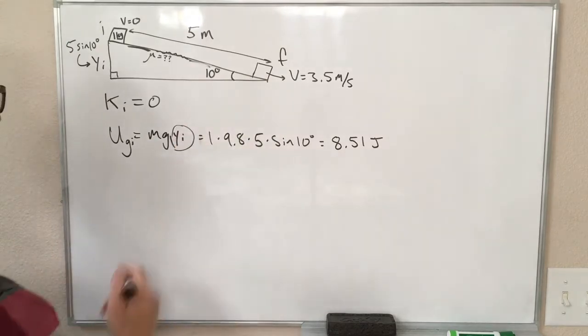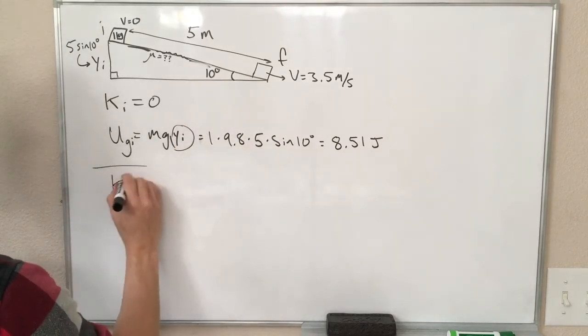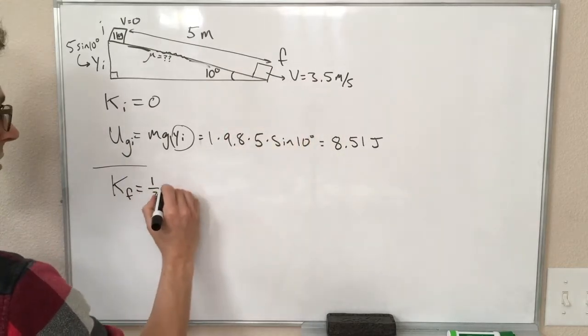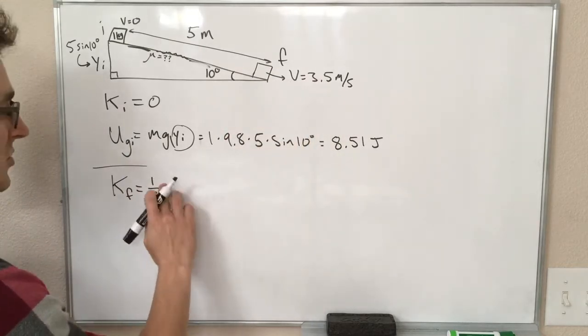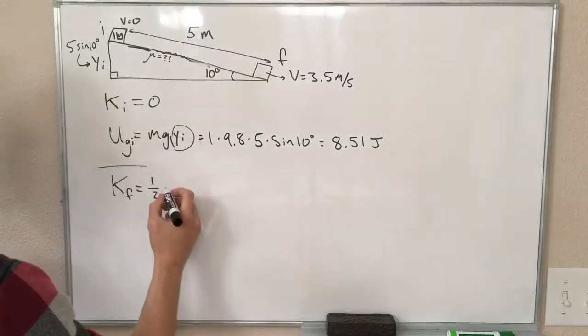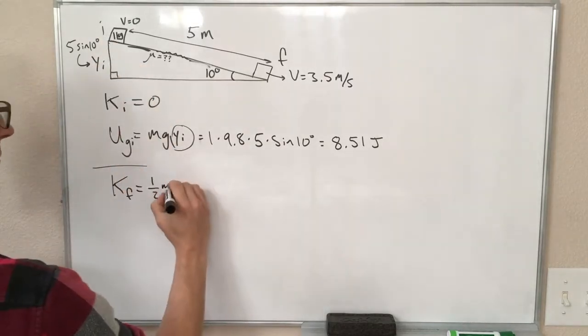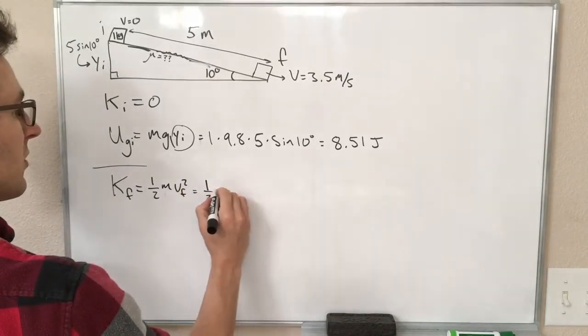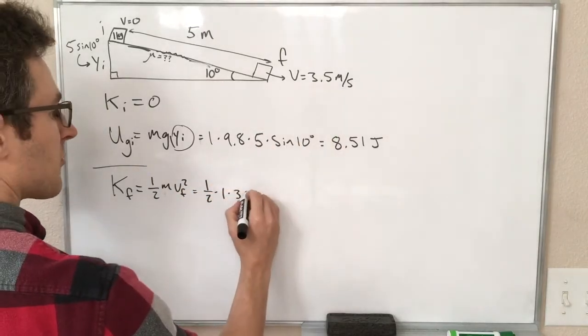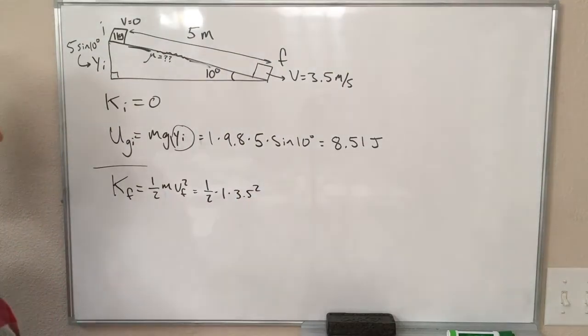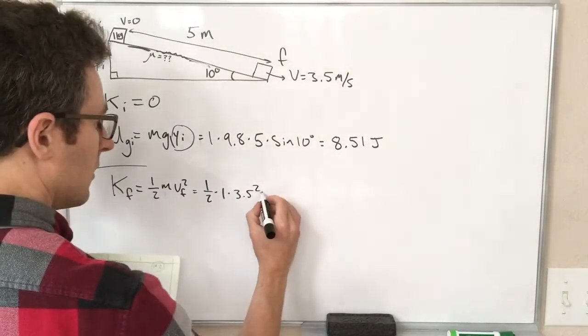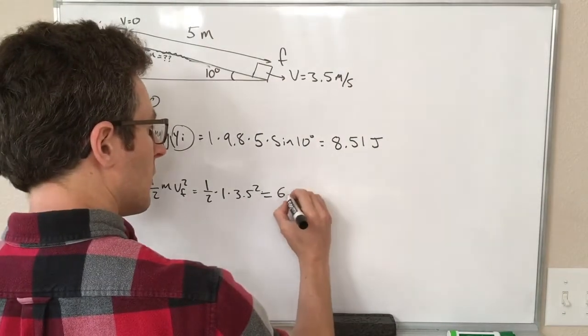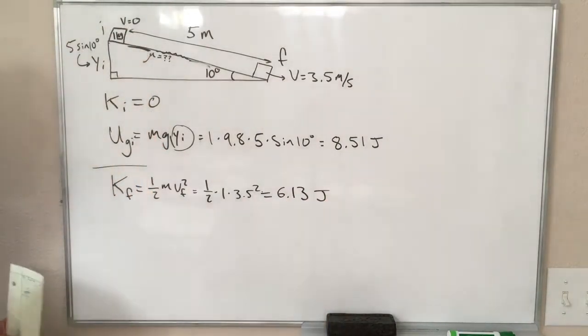Alright, let's look at the end. So at the end, our final kinetic energy, well, we have a velocity here, so now we do have a kinetic energy. Our kinetic energy is always 1/2 mv squared, I guess I'll just write that first, mv final squared. So this is 1/2 times 1 kilogram times 3.5 meters per second squared, and this is equal to 6.13 joules of kinetic energy.